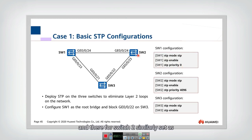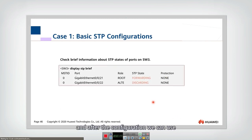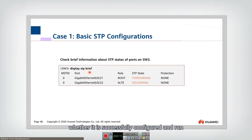For switch two, similarly set the mode, enable STP, and set the priority. For switch three, we don't need to use this command any longer because the default priority is 4096. After the configuration, we can use this command to check STP, whether it is successfully configured and running.